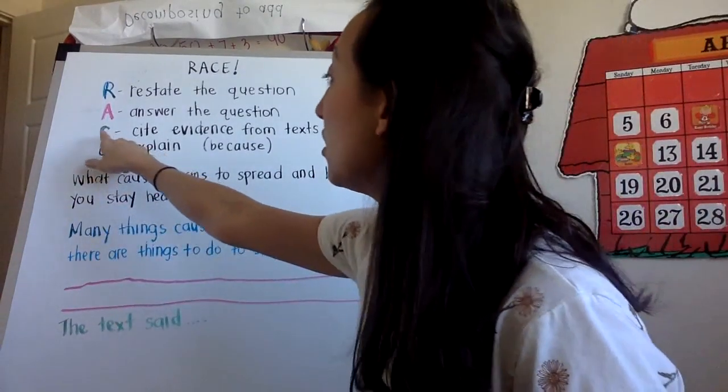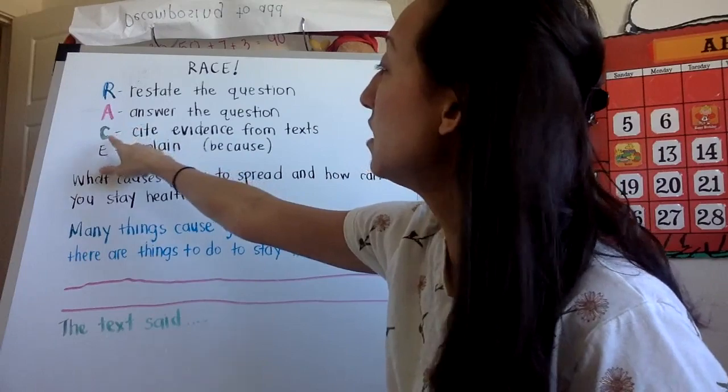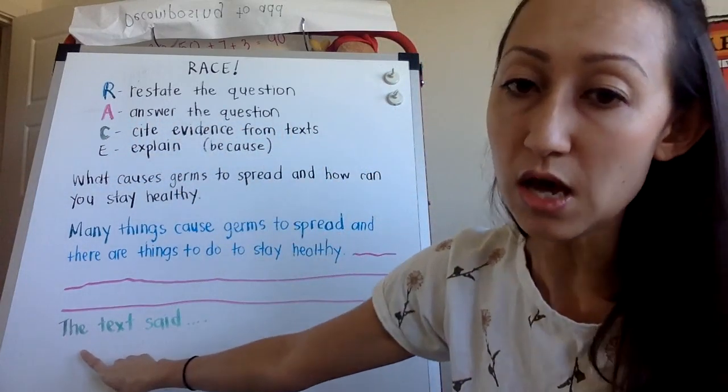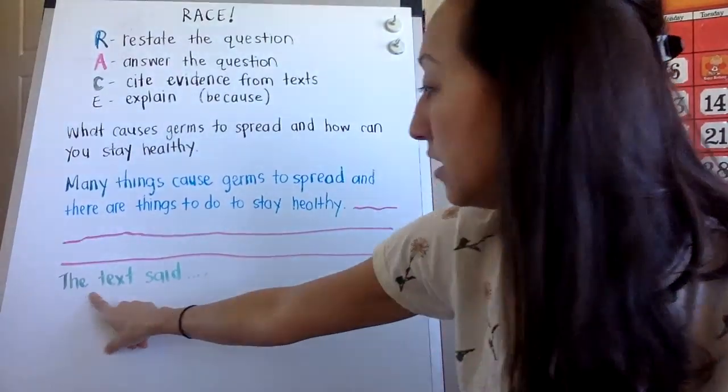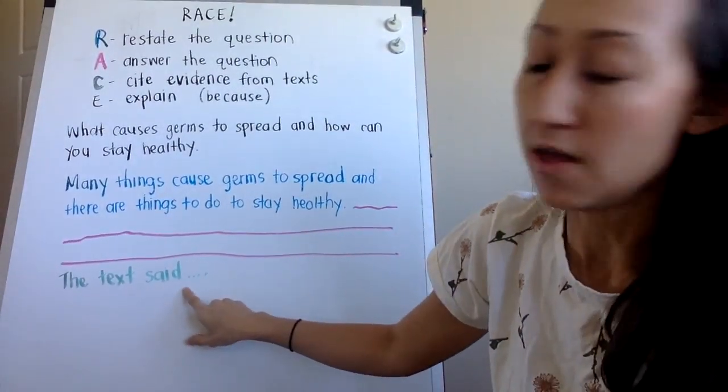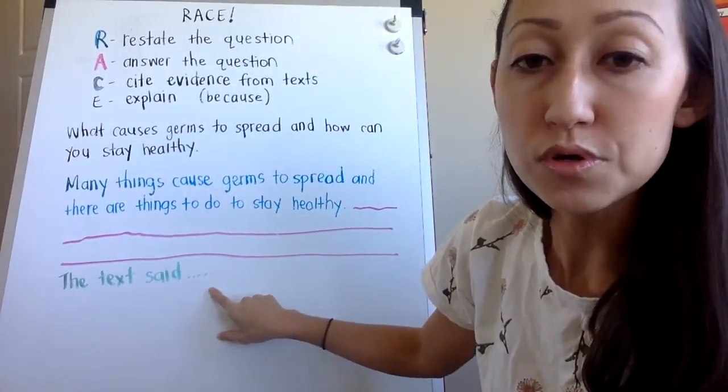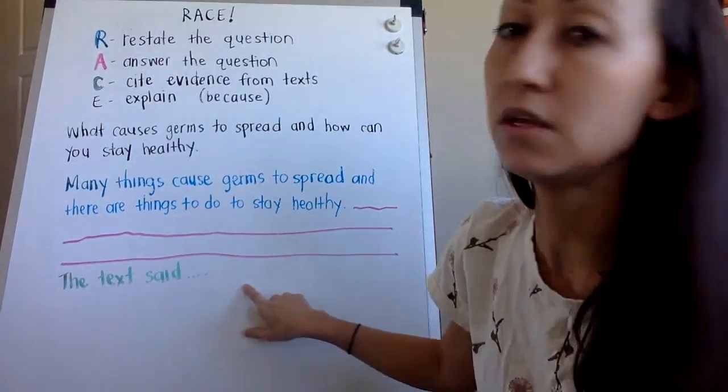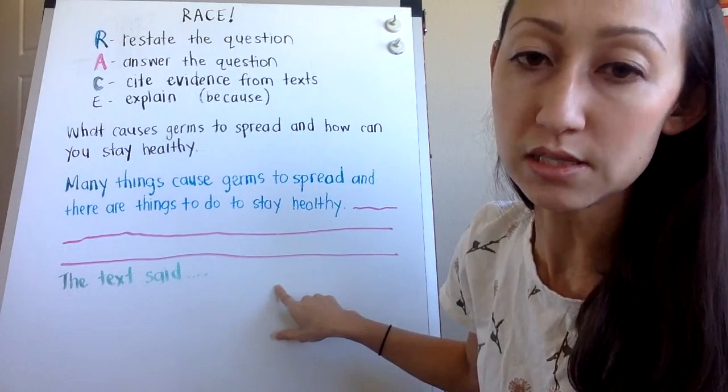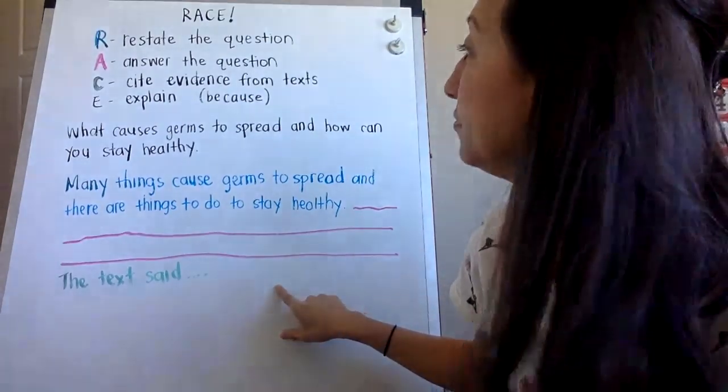And then the second part is to cite text evidence. So you're going to do that by starting off a sentence like this. The text said, and this is where you can pull words from the text. So you might have to go back to the story and find a sentence and write down a sentence that came from the book.